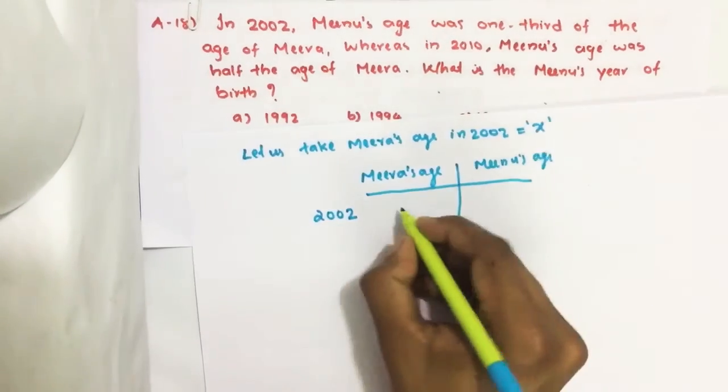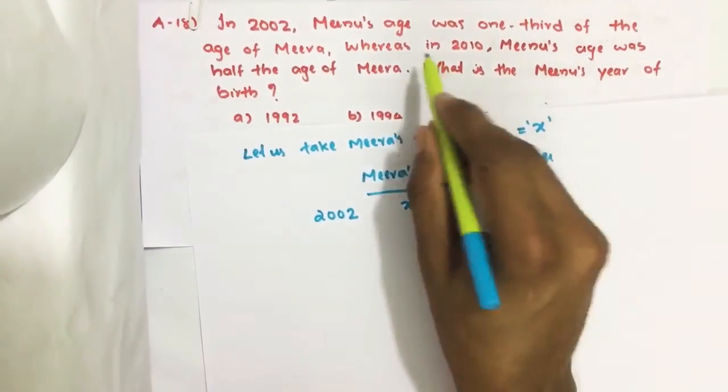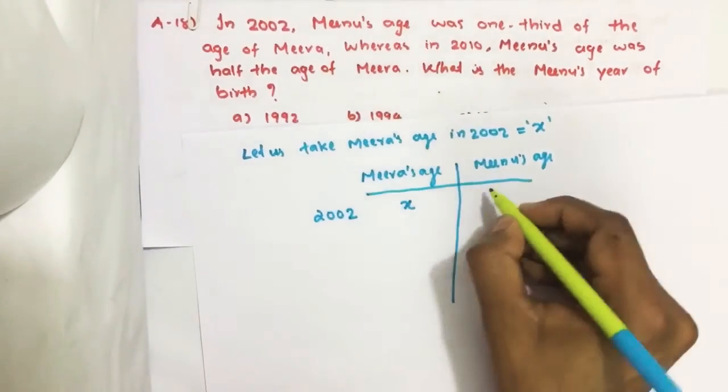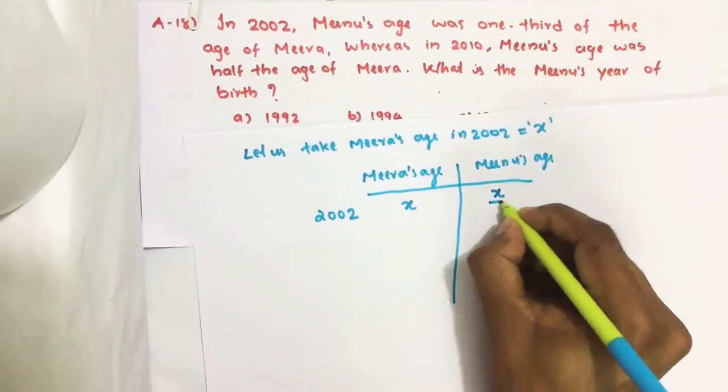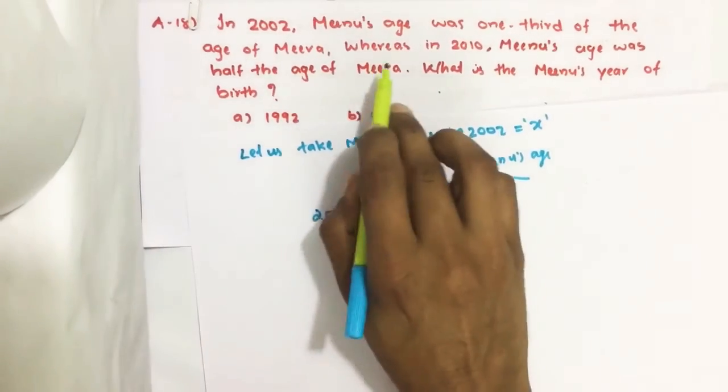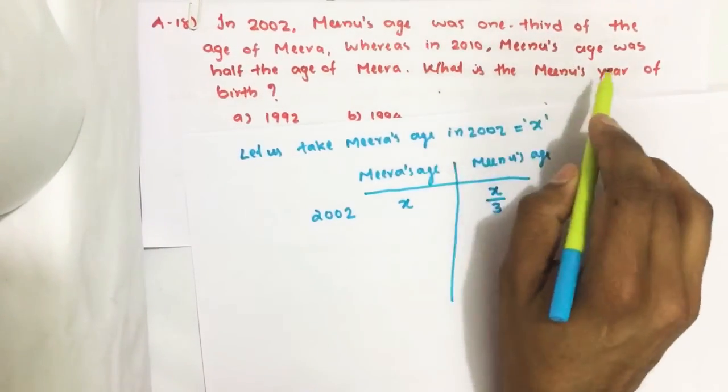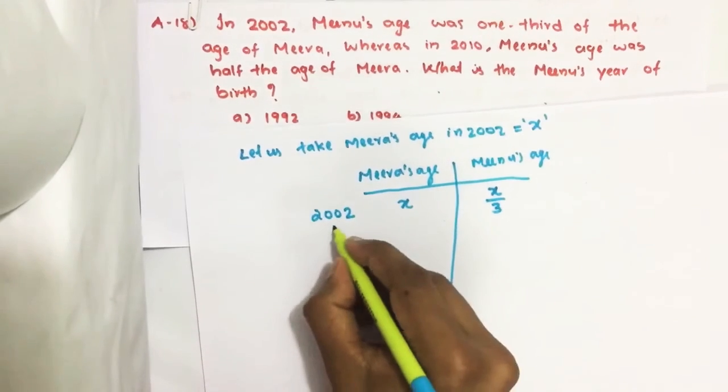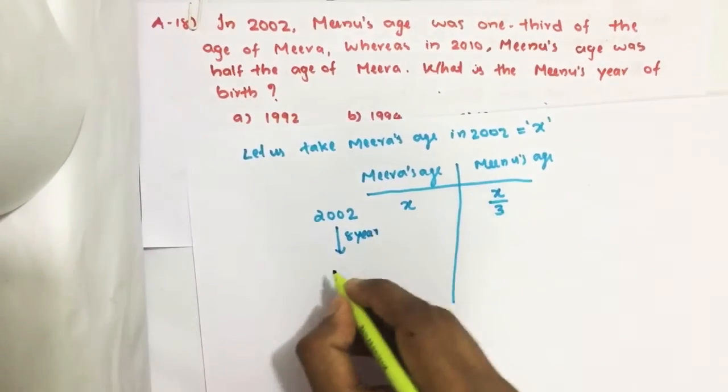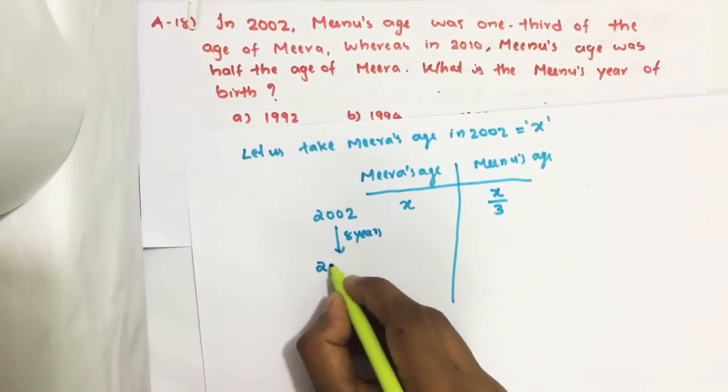Mira's age is X. Minoo's age is one-third of Mira's age, that means X by 3. Whereas in 2010, Minoo's age was half of the age of Mira. In 2010, that means after eight years.